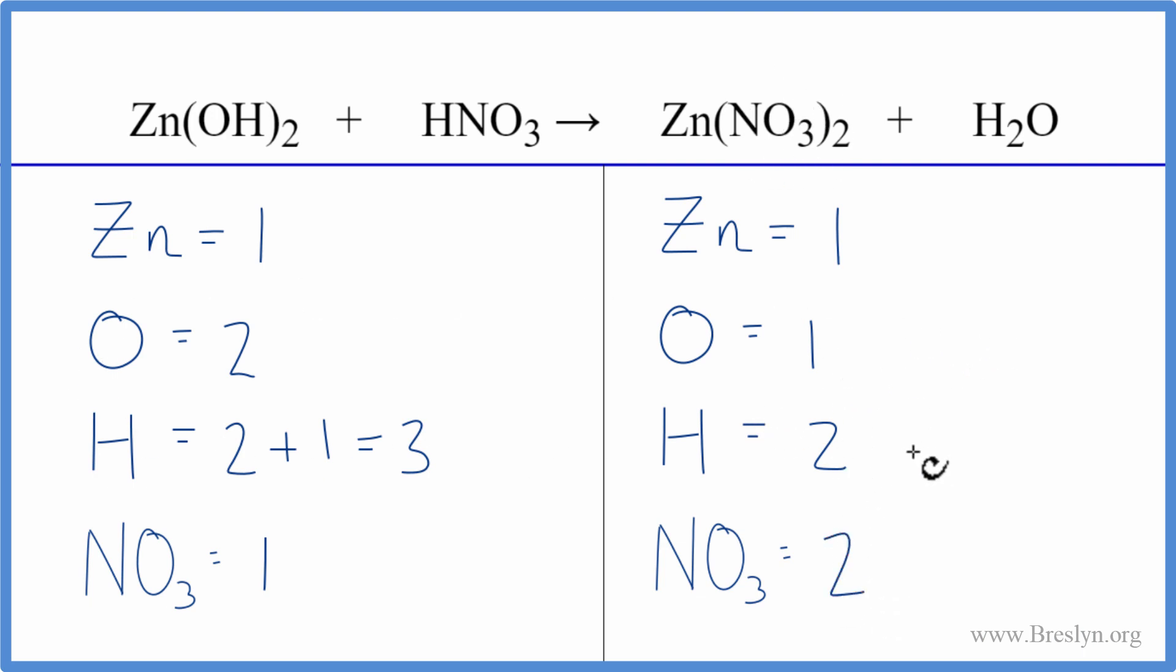We'll leave the oxygens and hydrogens to last, so let's begin with the nitrate by putting a two in front of the nitric acid. So we have one nitrate times two. That'll give us two of those. Those are balanced.